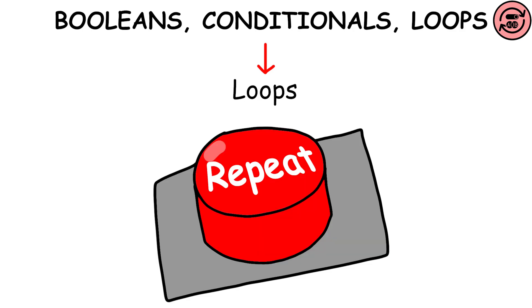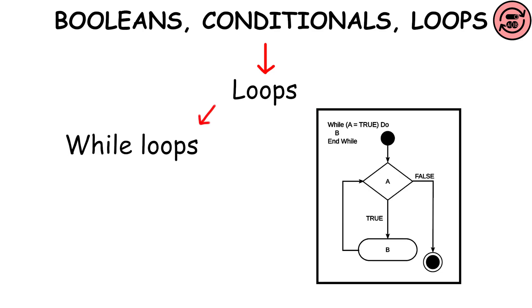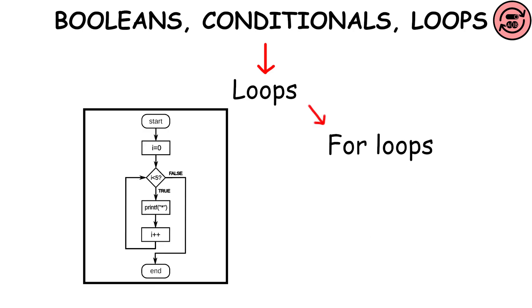And loops are like repeat buttons. They let us do things over and over again. We have different types of loops, like while loops, which keep going as long as a condition is true, and for loops, which repeat a certain number of times.